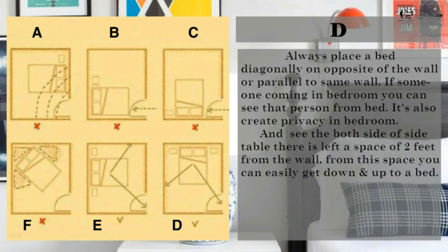Always place a bed diagonally on an opposite side of the wall or parallel to same wall. If someone is coming in the bedroom, you can see that person from the bed. It also creates privacy in the bedroom. And also see both sides of the side table, there is a space of two feet from the wall. From this space, you can easily get down and up to the bed.